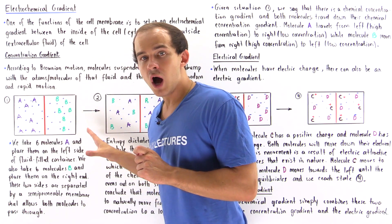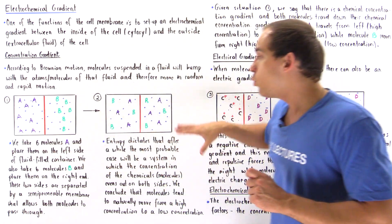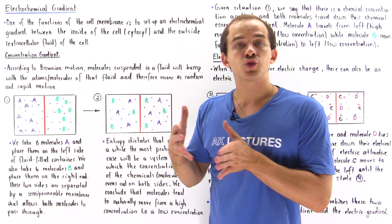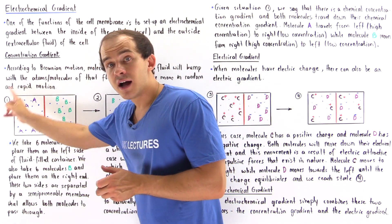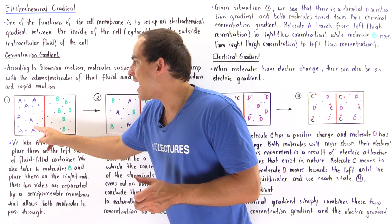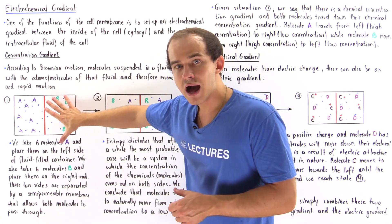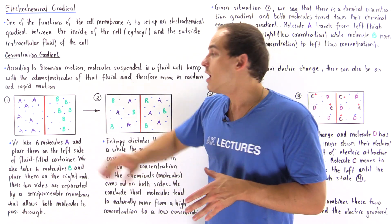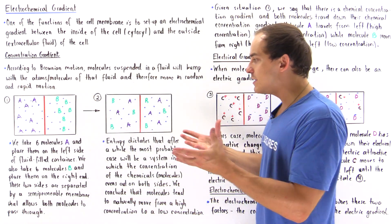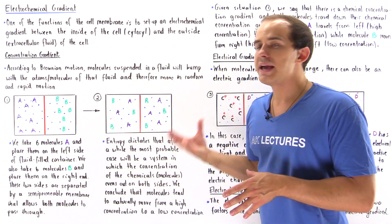If we begin with state one — where we have all the A molecules on the left side and all the B molecules on the right side — eventually we will develop the equilibrium state. We say that molecule A moves down the concentration gradient, from a higher concentration to a lower concentration. Notice we had no molecules A on the right side, so A will move naturally from left to right. Likewise, the B molecules will move down their concentration gradient in the opposite direction. Eventually, equilibrium will exist and our concentration gradient will cease to exist.